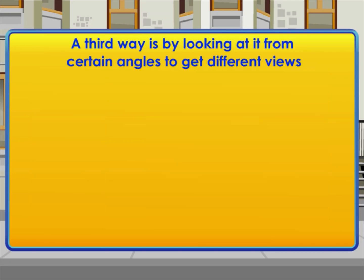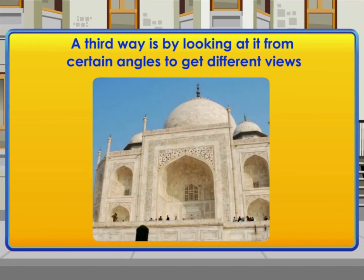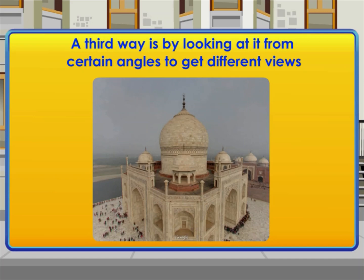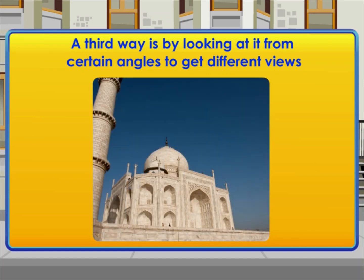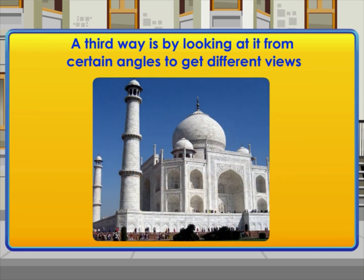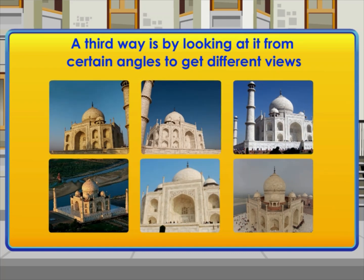A third way of viewing three dimensions is by looking at it from certain angles to get different views. Look at the image standing in front of it or by the side of it or from above. Each time, one will get a different view. You could try this for figures made by joining cubes.